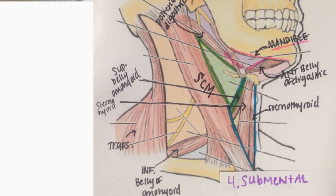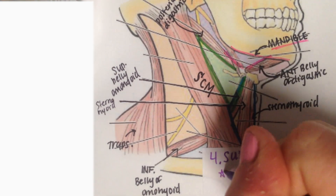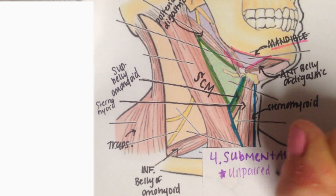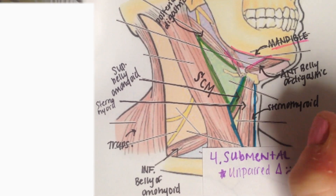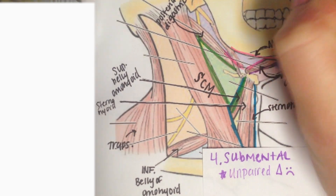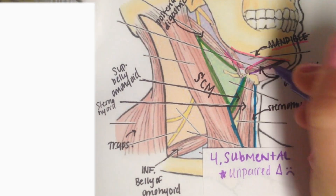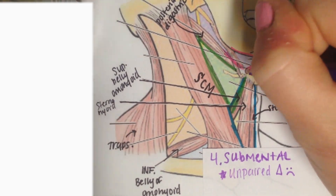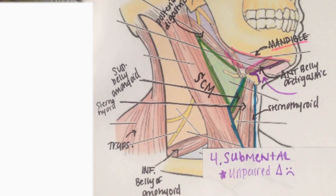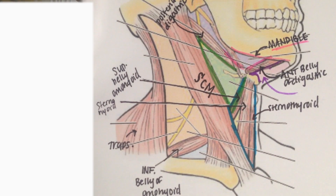The last triangle we're going to talk about is our submental triangle. This is the only unpaired triangle. How sad. The submental triangle borders are going to be our anterior belly of our digastric and our hyoid bone. The triangle itself will contain the submental lymph nodes.